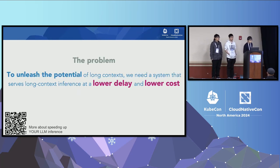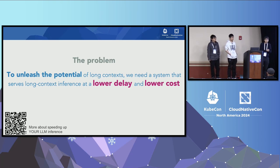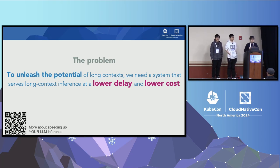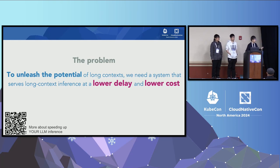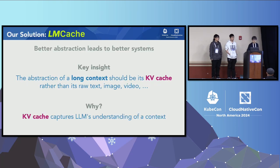To unleash the potential of long-context inference, what we need is a better system — one that can serve long-context inference with lower delay, lower cost, and at very high quality. We believe we have an answer to that, driven by our decade-long research in building large-scale AI systems.